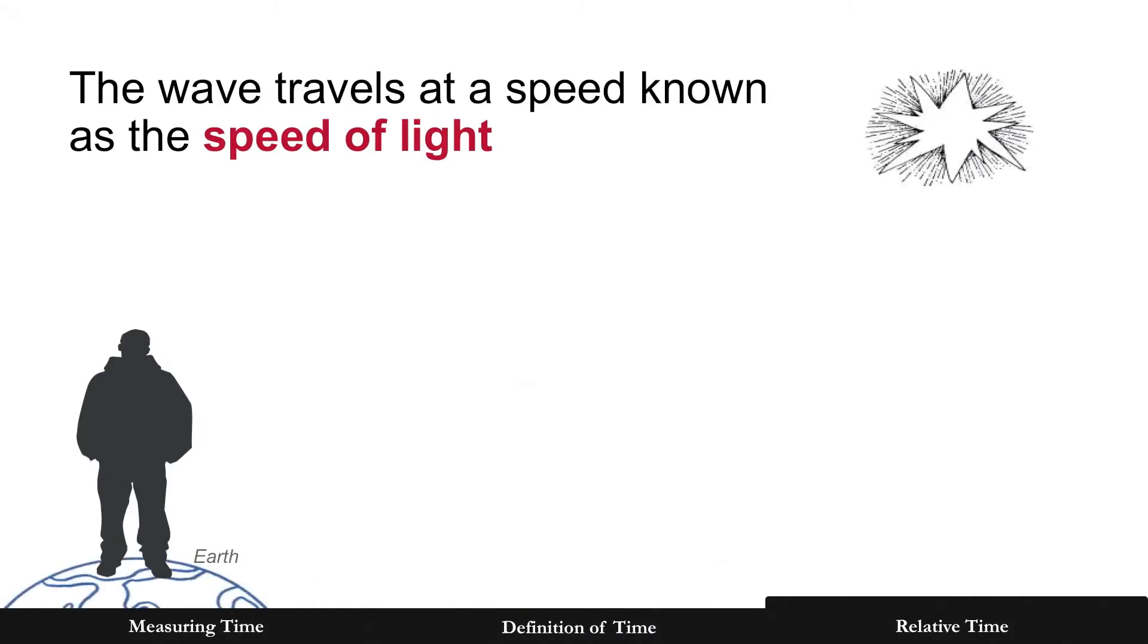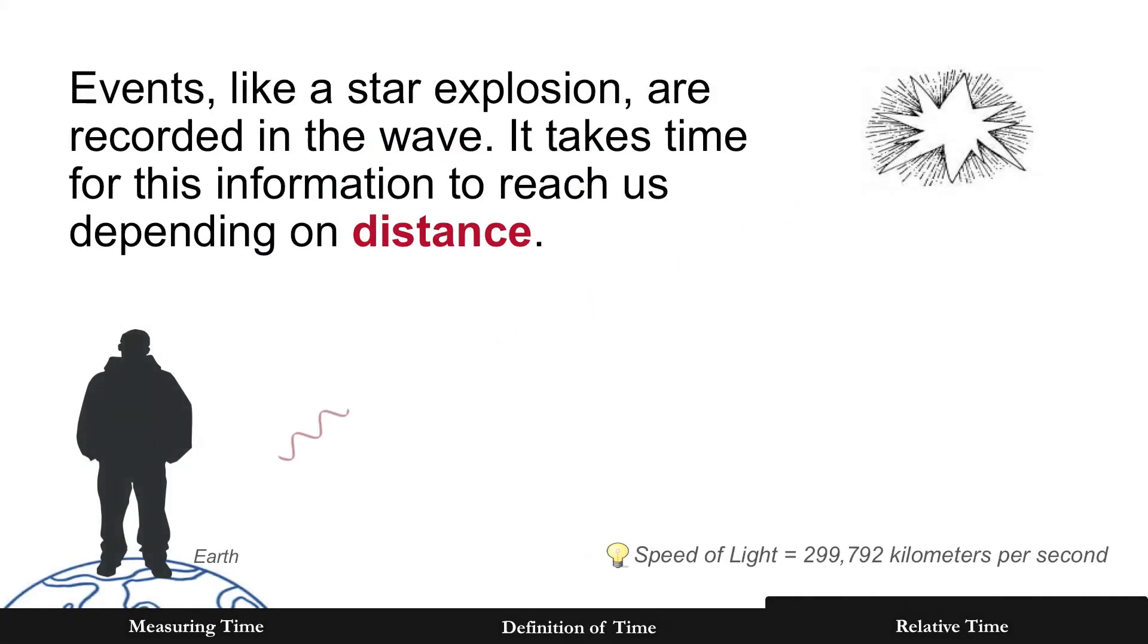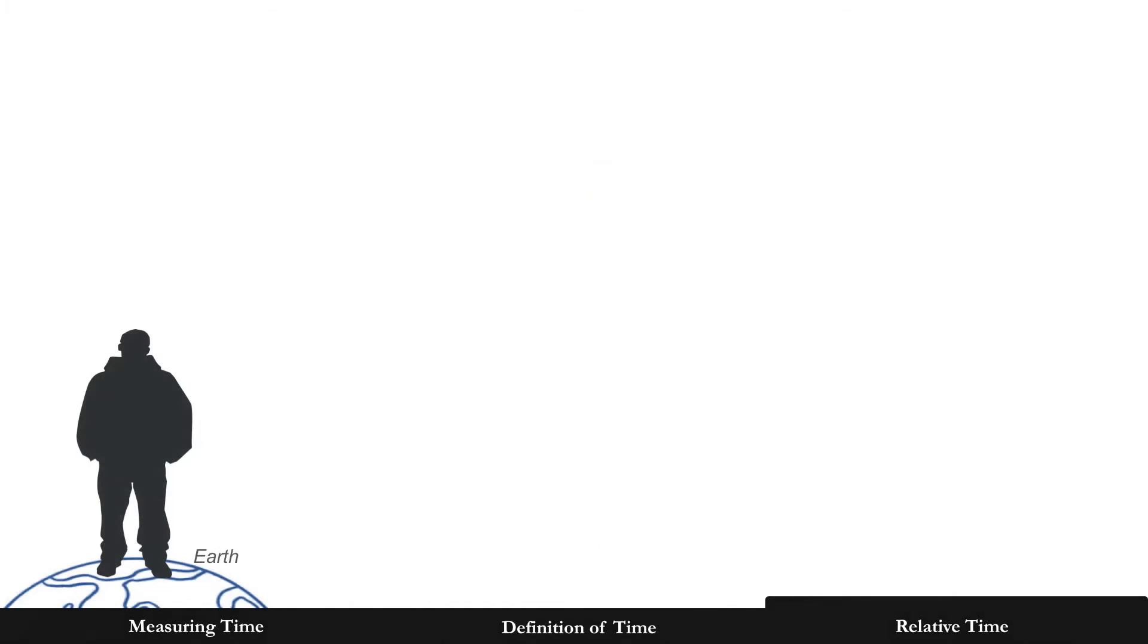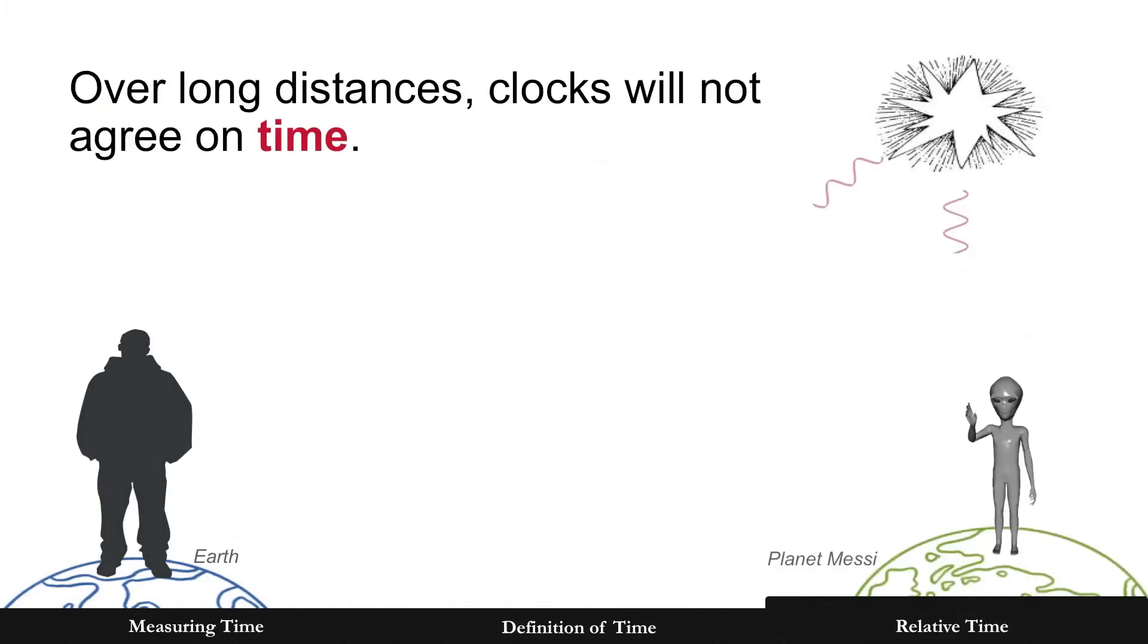The wave travels at a speed known as the speed of light. Events like a star explosion are recorded in the wave. It takes time for this information to reach us, depending on the distance. Over long distances, clocks will not agree on time.